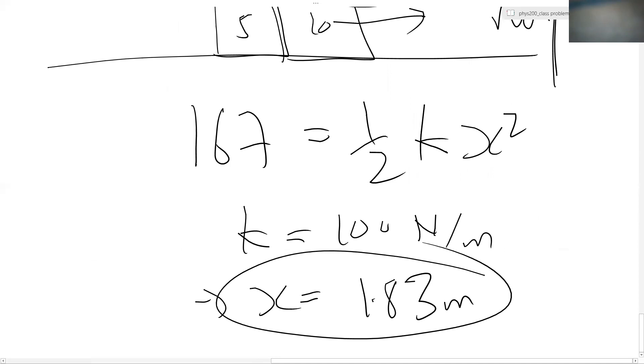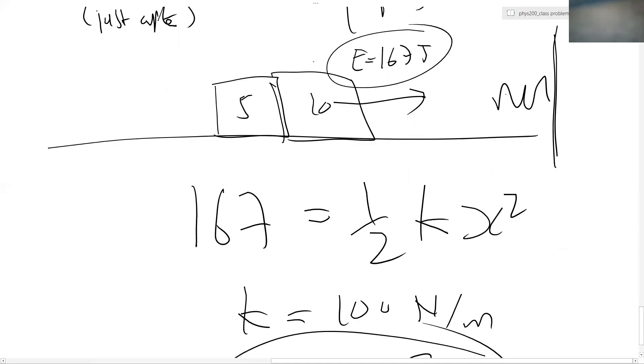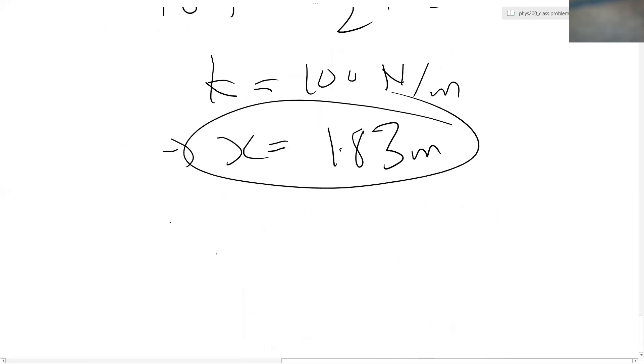The reason being that you lost a lot of energy during that collision. In fact, the energy lost during the collision is 500 minus the 167. So it's about 333 joules lost due to the collision. That would have been through the molecule squashing. That's basically lost as heat.